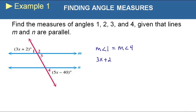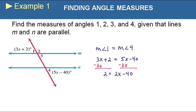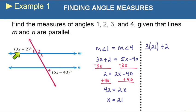The measure of angle 1 is 3x + 2, and that equals 5x − 40. Subtract 3x from both sides and add 40 to both sides. We get 42 = 2x, or x = 21. Now 21 is not the answer, but substituting back: 3(21) + 2 = 65. We could also use 5x − 40 and get the same answer since they're equal. So angle 1 and angle 4 are both 65 degrees.